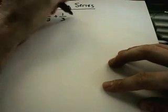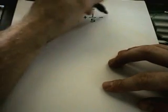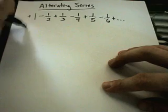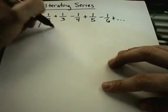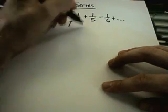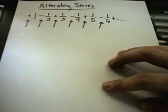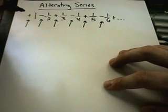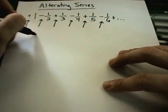So again, an example of an alternating series could be 1 minus 1 half plus 1 third minus 1 fourth plus 1 fifth minus 1 sixth, et cetera. Notice the alternating refers to the signs.